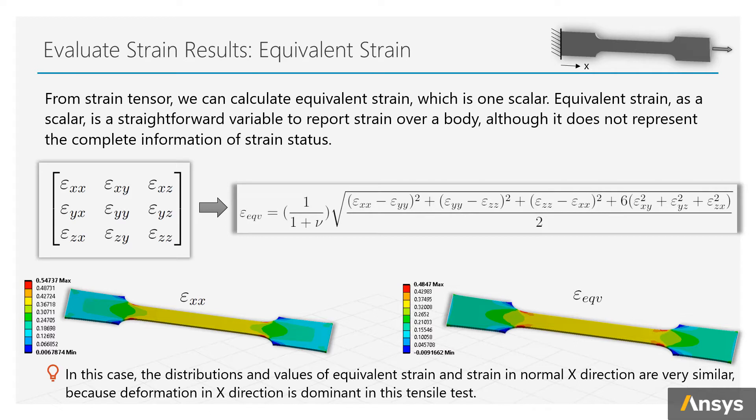In some places, equivalent strain may not have this term with Poisson's ratio. In this uniaxial tensor test problem, if you compare the distribution of equivalent strain and the one or normal strain in tension direction, you will see they are very similar.